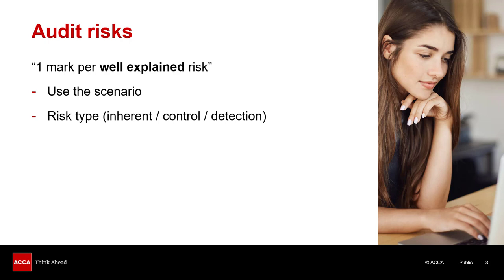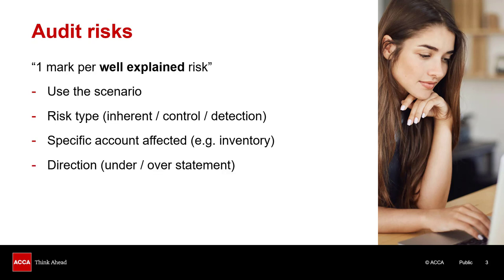Next, it's best to describe what kind of risk it is. Is it an inherent risk — something that could go wrong because of the nature of the company's business? Is it a control risk — something that could go wrong because of a problem with the company's systems? Or is it a detection risk — something that's gone wrong with the auditor so they've missed the problem? Also be precise about which account is affected, state the direction of the problem — understatement or overstatement — and ensure your explanation is sufficiently detailed and precise.